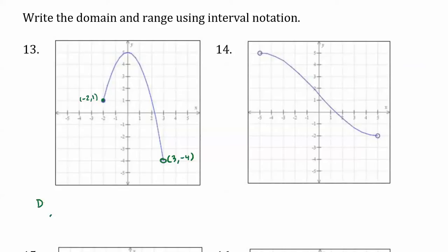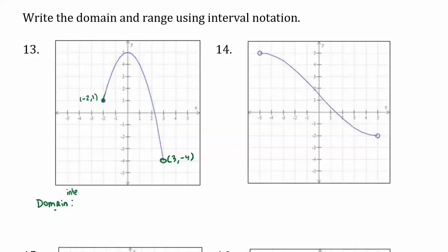The domain of the graph cannot be listed as a set of individual points. You cannot say it's hitting negative 2, negative 1, 0, 1, 2, and 3, because you're leaving out all the fractions, decimals, and irrational numbers on the number line between those integers. So when it's connected like this, we list the domain as an interval.